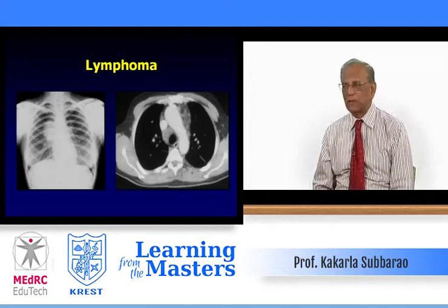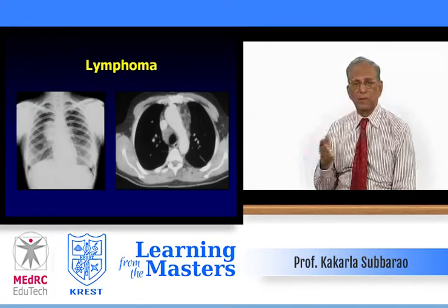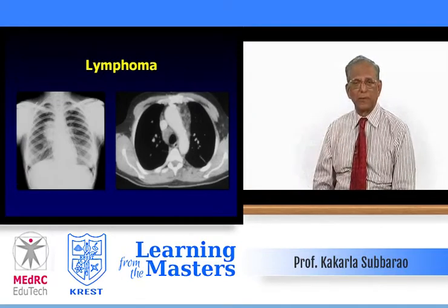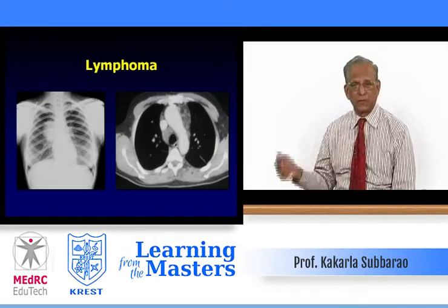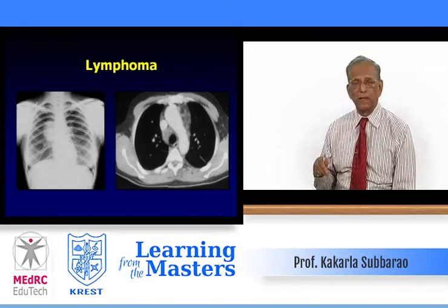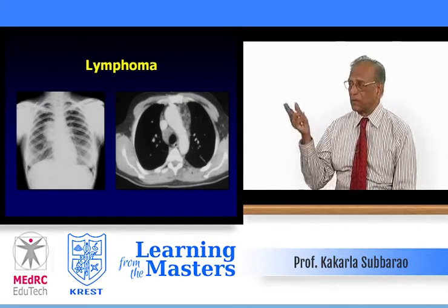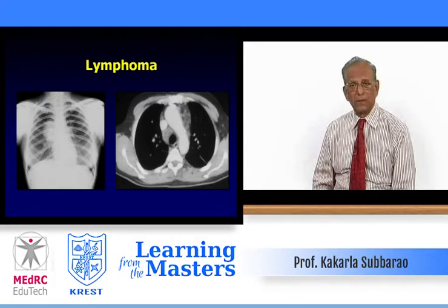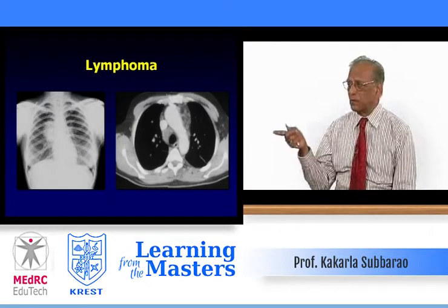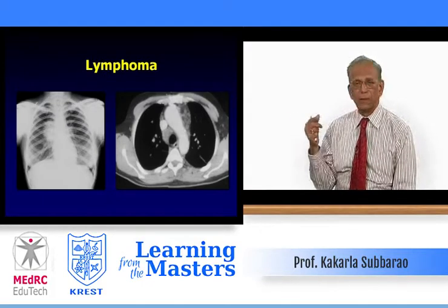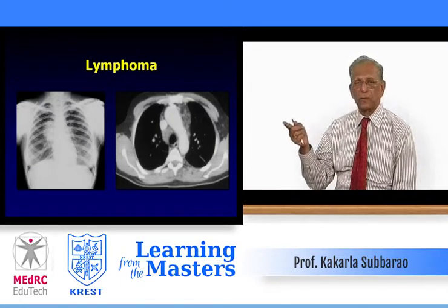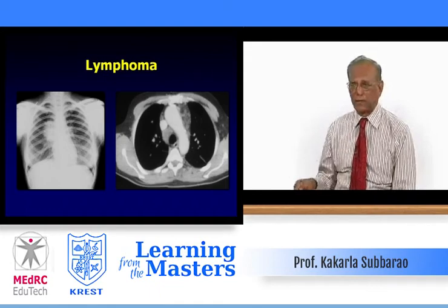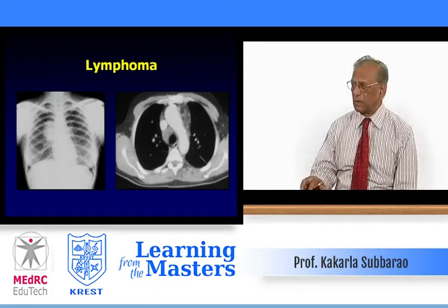Then we come to lymphoma. On a PA view there is a large right hilar mass — we know it is nodes, particularly in children, because bronchogenic carcinoma doesn't usually occur in childhood. The lateral view also shows a nodal mass. On CT you can see there are nodes along the aorta, in the anterior mediastinum, below the superior vena cava, and along the paratracheal area. This is lymphoma.